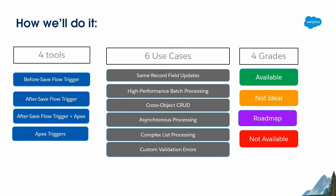We divide this comparison into three sections: two tools — Flow and Apex Trigger — six use cases, and four grades: Available, Not Ideal, Roadmap, and Not Available. Roadmap means Salesforce is working on it but it's not available yet. The six use cases we'll cover are: same record field updates, high performance batch processing, cross-object CRUD, asynchronous processing, complex list processing, and custom validation errors.